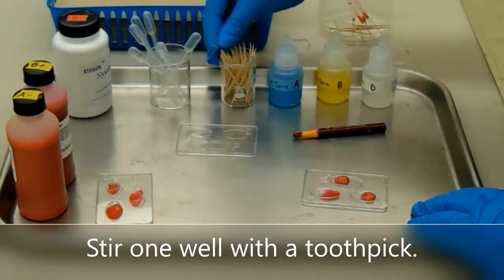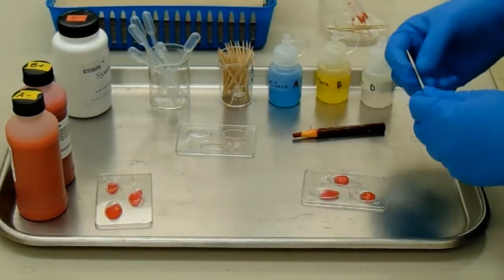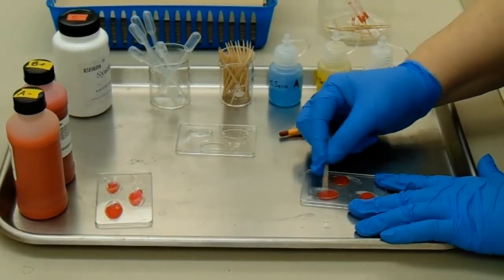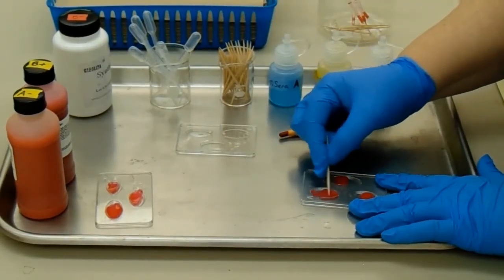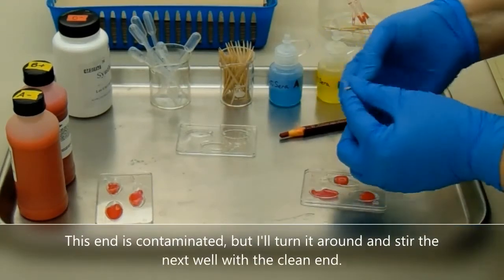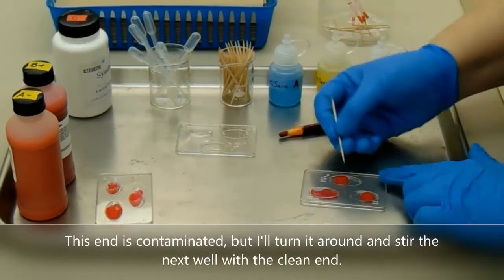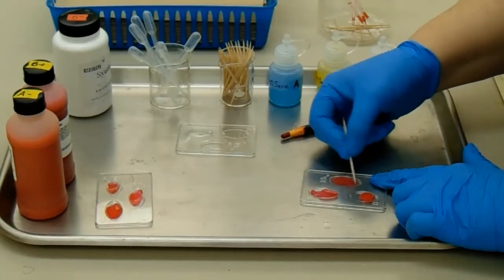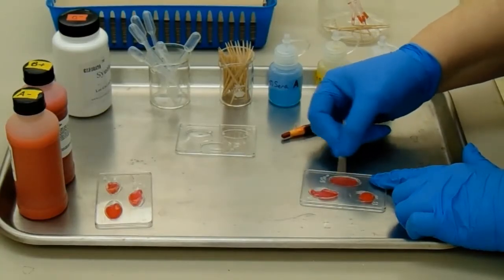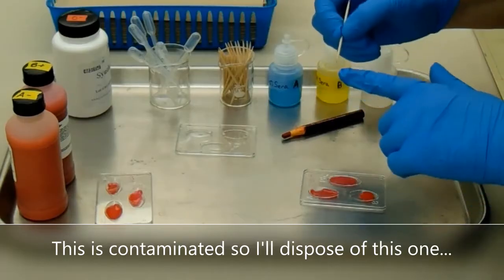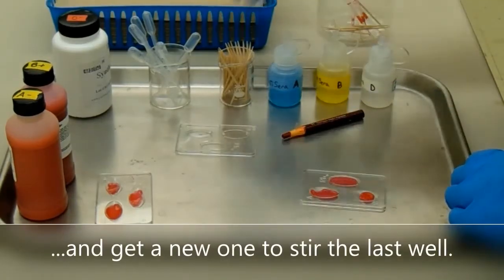Stir one well with a toothpick. This end is contaminated, but I'll turn it around and stir the next well with the clean end. This is contaminated, so I'll dispose of this one and get a new one to stir the last well.